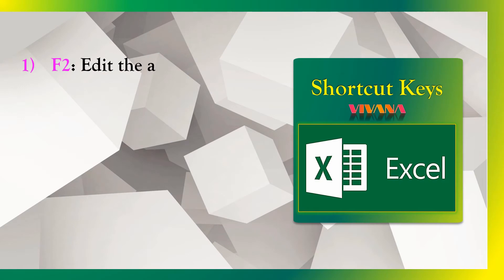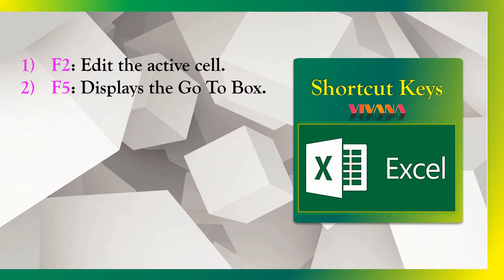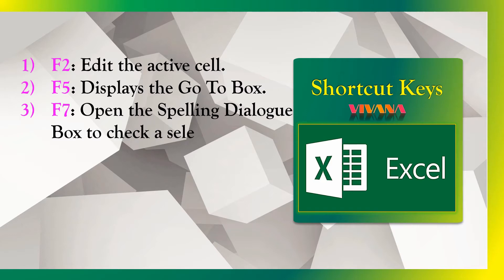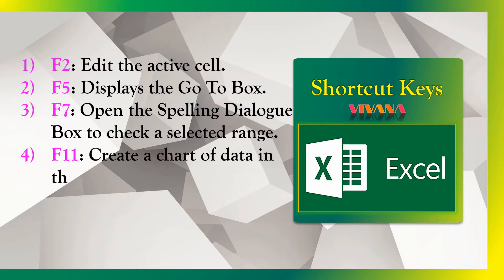1. F2 — Edit the active cell. 2. F5 — Display the Go-To box. 3. F7 — Open the spelling dialog box to check a selected range. 4. F11 — Create a chart of data in the current range in a separate sheet.